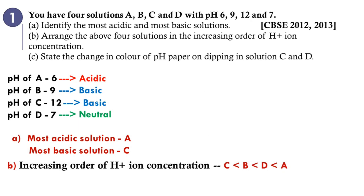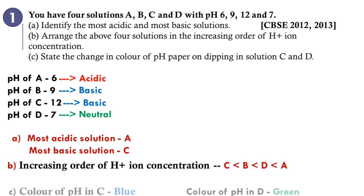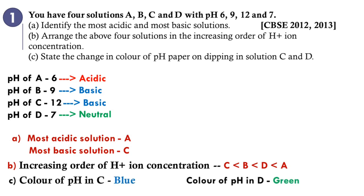For the change in color of pH paper: solution C is basic, so the pH paper will show a blue or bluish shade. Solution D is neutral, so the pH paper will show green color.